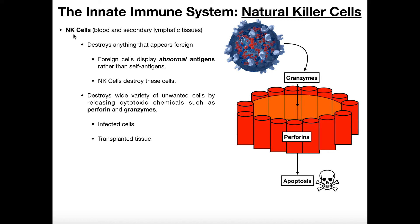The way that NK cells recognize something as foreign is they look for what we call a self-antigen. We haven't talked much about antigens yet, but let me give you a brief analogy. An antigen is basically a name tag. All organisms, whether they're bacteria or your own cells, have antigens. We can have two kinds: a self-antigen and a foreign antigen.